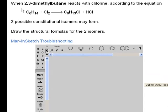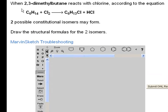The first question reads, when 2,3-dimethylbutane reacts with chlorine gas, Cl2, according to the equation, two possible constitutional isomers may form. Draw structural formulas for the two isomers.